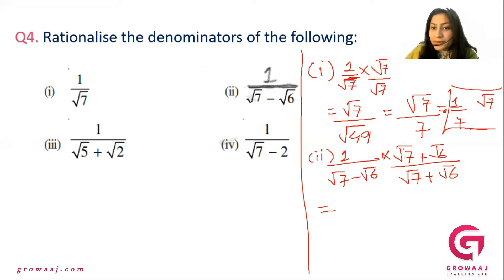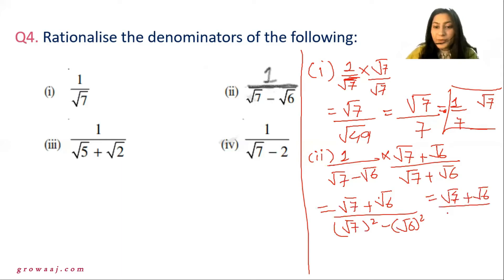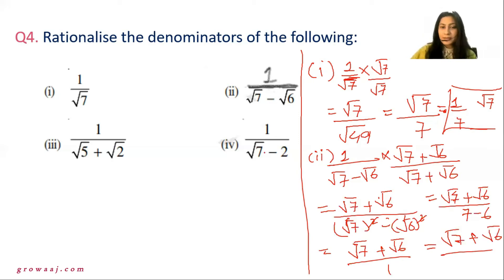So the numerator becomes square root of 7 plus square root of 6, and the denominator becomes square root of 7 squared minus square root of 6 squared, which is 7 minus 6 equals 1. So the result is simply square root of 7 plus square root of 6. That is the answer.